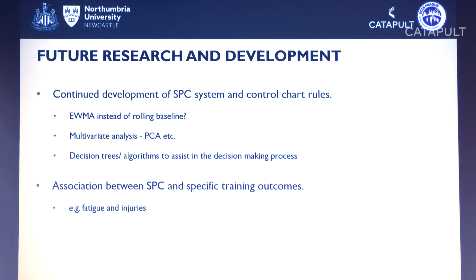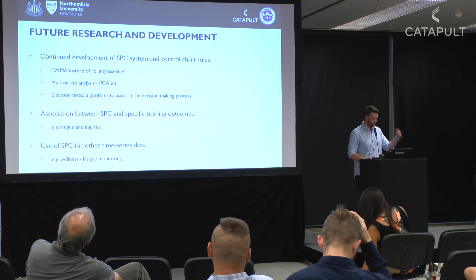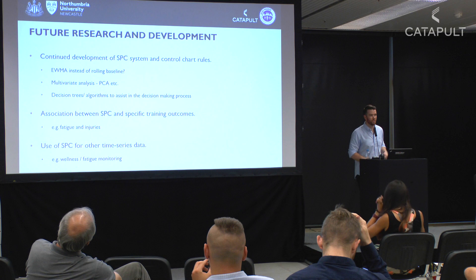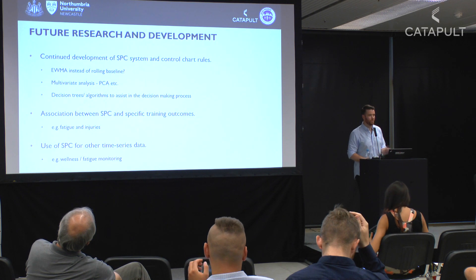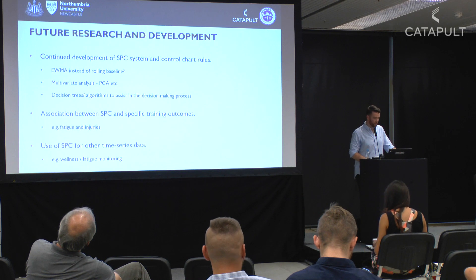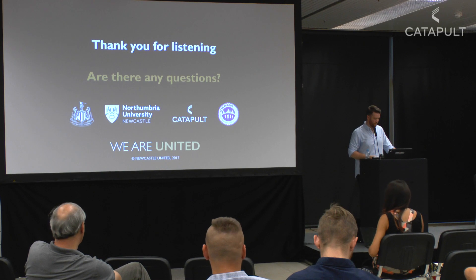We also want to look at the association between this system and specific outcomes — fitness, fatigue, and injury. Do certain rules flag up more often before a player gets injured, or what patterns precede peak fitness? We'll probably need a few years of data to understand that. Finally, we'd like to apply this to other time series data collected daily or weekly, such as wellness and fatigue monitoring. Thank you — I'll take any questions.